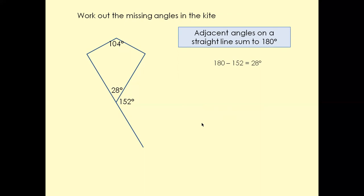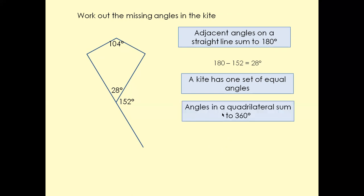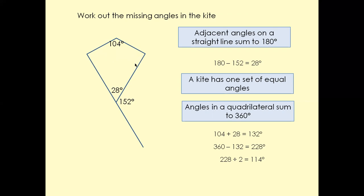The most important rule to remember: a kite has one set of equal angles, so these two angles here must be equal. To find these two missing angles, add the known angles — that gives 132 degrees — then take away from 360, which gives 228 degrees. So these two equal angles add up to 228 degrees. Divide 228 by 2 and that gives us 114 degrees. So this angle here is 114 degrees, and this angle here is 114 degrees as well.